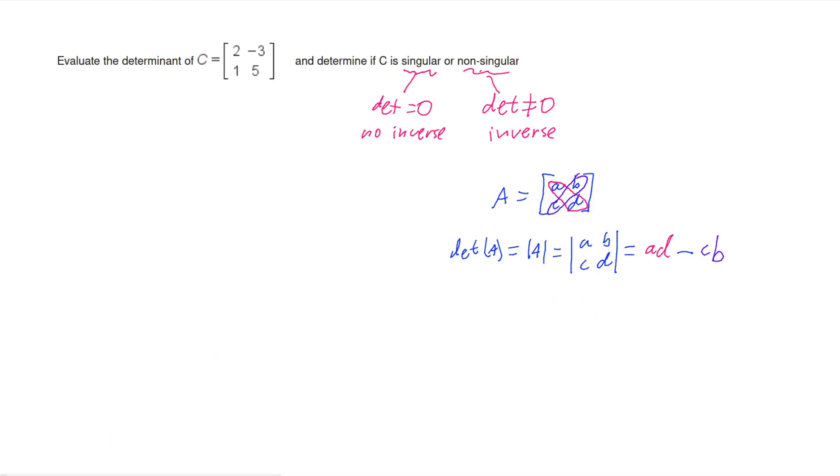So now if we go and work out our determinant of C, we can see that we're going to want to do our leading diagonal, which is 2 times 5, and we're going to minus off the product of the other diagonal, 1 and negative 3. So 1 times by negative 3.